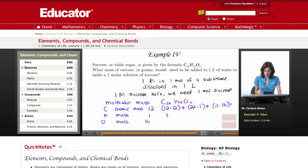And if you figure this out, 12 times 12 comes out to 144, plus 22, 11 times 16 is actually 176, so that's 342 grams.